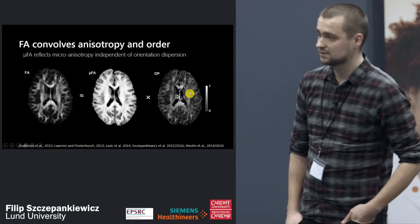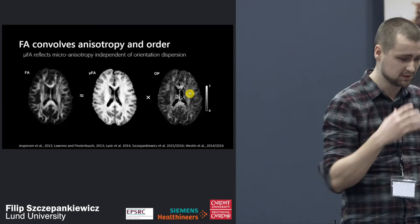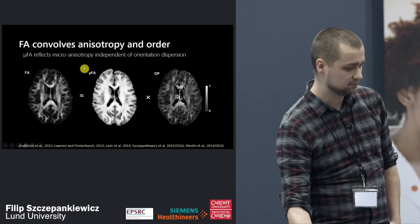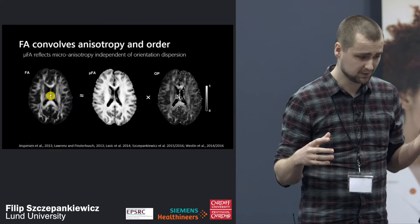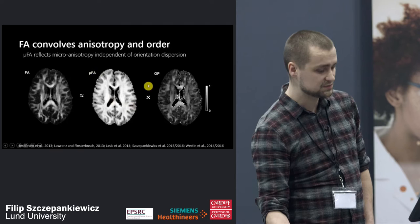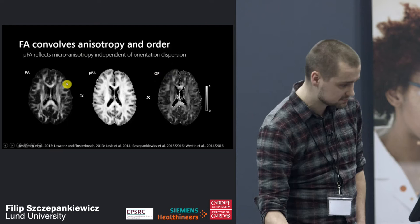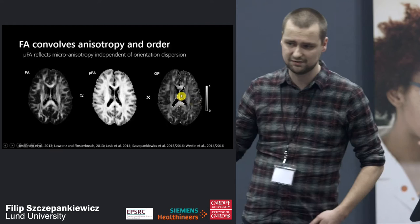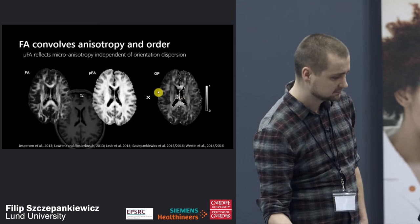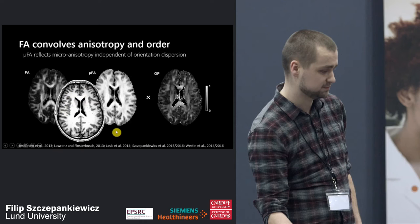These parameter maps were acquired at a Prisma system in about 8 minutes with full brain coverage at 2 to 4 millimeter resolution. When we produce an FA map, we can see it's really a combined effect of the actual underlying anisotropy — described with the microscopic fractional anisotropy or micro-FA — convolved by the order parameter. There is a striking resemblance between the fractional anisotropy and the order parameter, showing that FA actually reflects order rather than anisotropy. The micro-FA map looks much more like a morphological map of white matter, as we would expect.